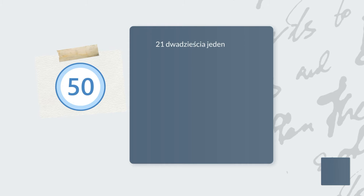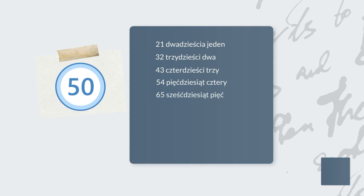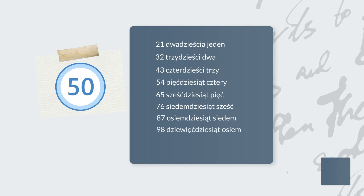Now what goes in between those numbers? dwadzieścia jeden, trzydzieści dwa, czterdzieści trzy, pięćdziesiąt cztery, sześćdziesiąt pięć, siedemdziesiąt sześć, osiemdziesiąt siedem, dziewięćdziesiąt osiem, sto dziewięć. As you can see, no surprises here.